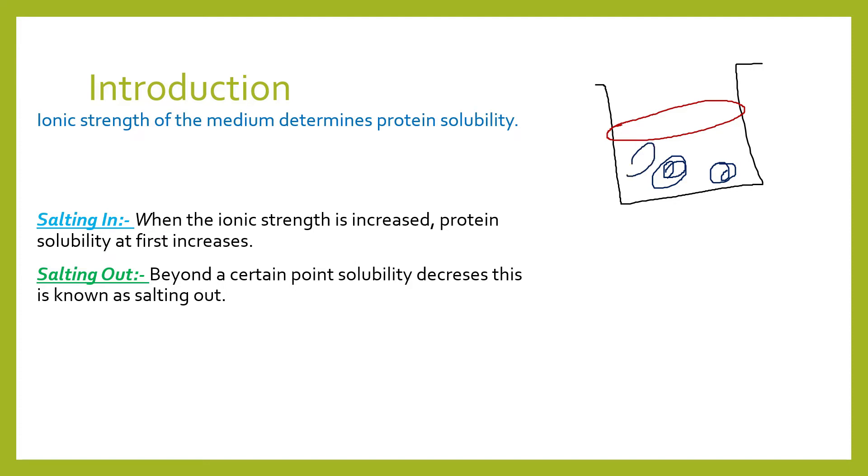So what happens is, when we add salt like ammonium sulfate, this salt tries to get attached with the proteins and stabilizes the protein. But this is for some time. As I have mentioned, when the ionic strength is increased, protein solubility at first increases. So when we add ammonium salt, it stabilizes the protein structure. This is called salting in.